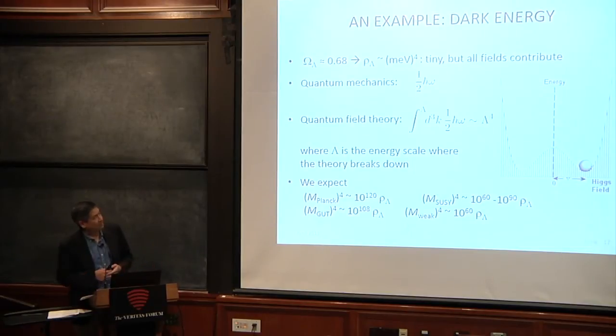In quantum field theory this generalizes because we have fields and we decompose them into normal modes. Bottom line is we end up with something that sums over these zero point energies and we get something that's lambda to the fourth, where lambda is the energy scale where the theory breaks down. We know that our theory, at least we think we know our theory up to a certain level, so we expect this lambda to be some number like the Planck scale or the grand unification scale, supersymmetry breaking scale, the weak scale.